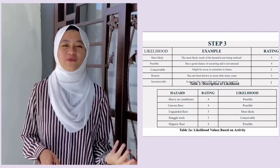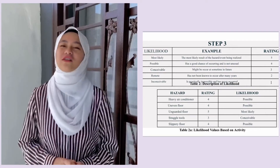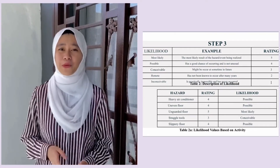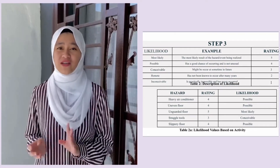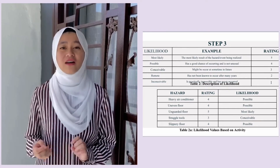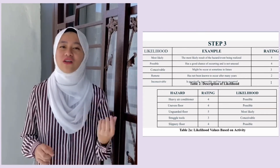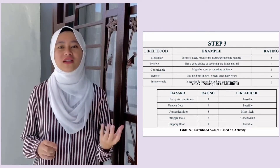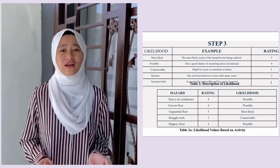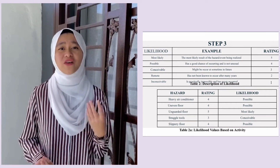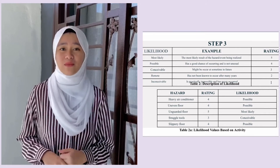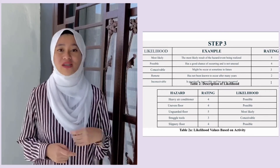Moving on to step three, we are going to talk about likelihood. Likelihood defines the probability of an effect occurring if an event or hazard occurs. In order to determine the risk likelihood, we are going to assign values based on the likelihood table that is related to each risk.